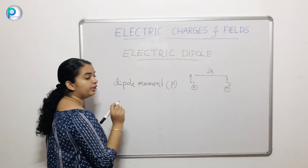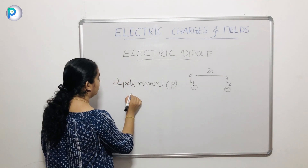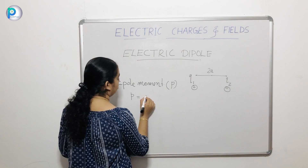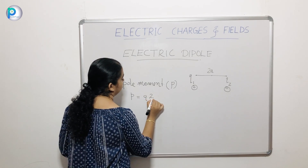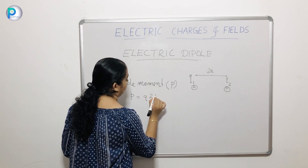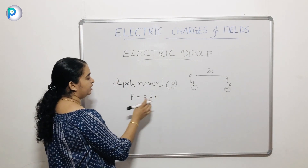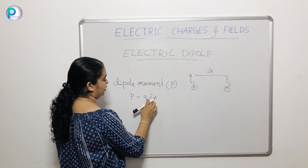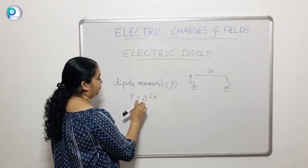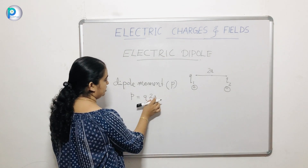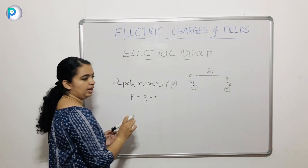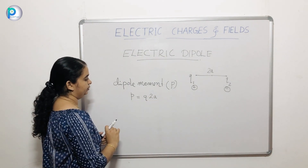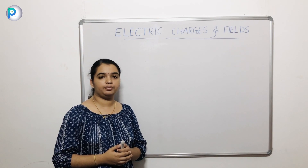For the dipole moment, P is equal to Q into 2L — that is, any charge into the distance between them. The product of charge and the distance between the charges gives us the dipole moment.